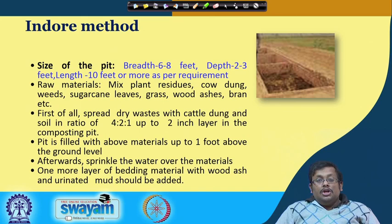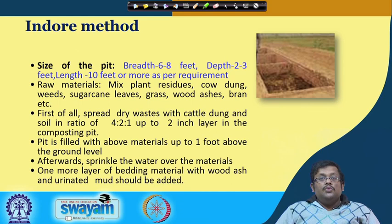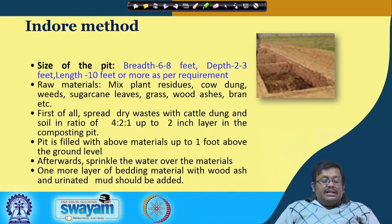The raw materials used in the Indore method are: mixed plant residues, cow dung, weeds, sugarcane, urine-soaked mud, grass, wood ashes, and bran. These are the materials used as raw materials in the Indore method of composting.